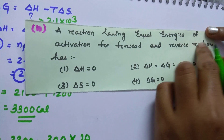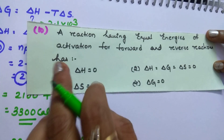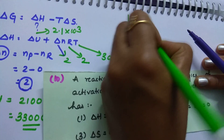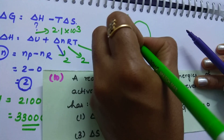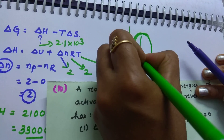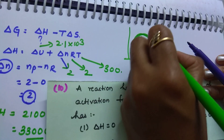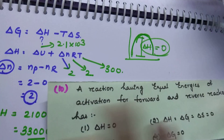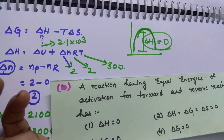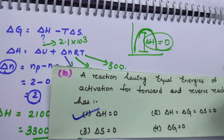A reaction having equal energies of activation for forward and backward reaction — this is an easy question. The amount of energy required to carry forward and backward reactions are the same. Therefore the enthalpy change during the reaction will be zero, because forward minus backward activation energy both are the same. So delta H equals zero — this is your answer.